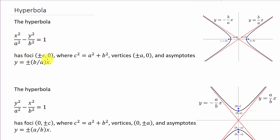The foci is plus or minus C, where C squared equals A squared plus B squared. Vertices are at plus or minus A, 0. And asymptotes are Y equals plus or minus B over A times X.